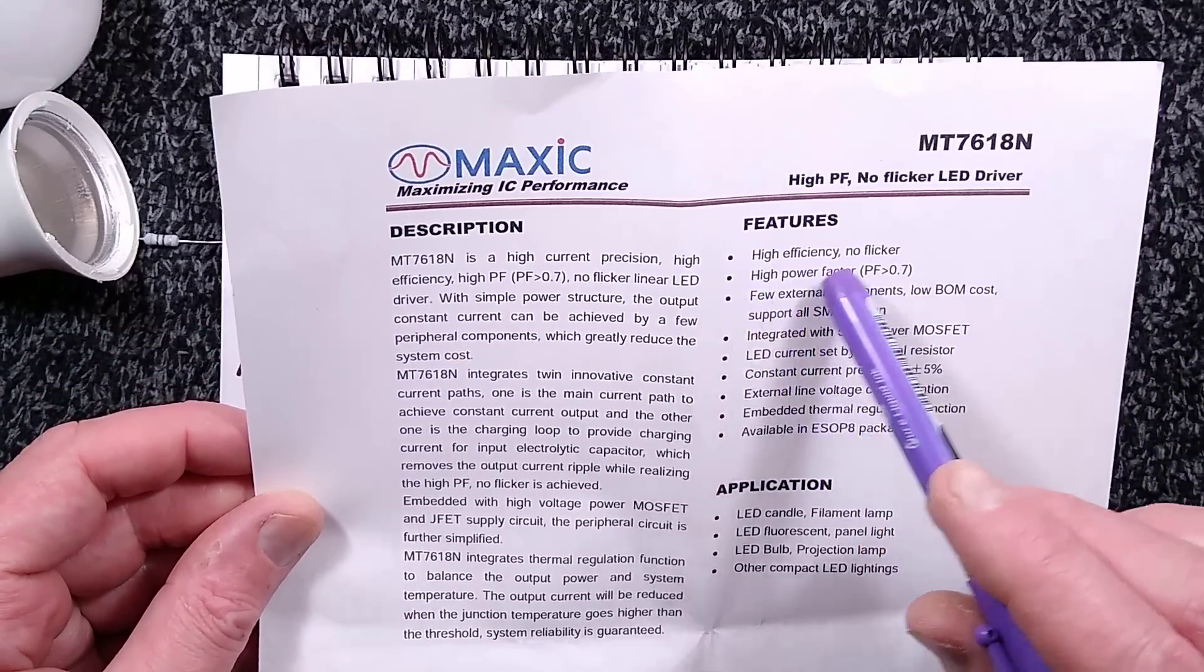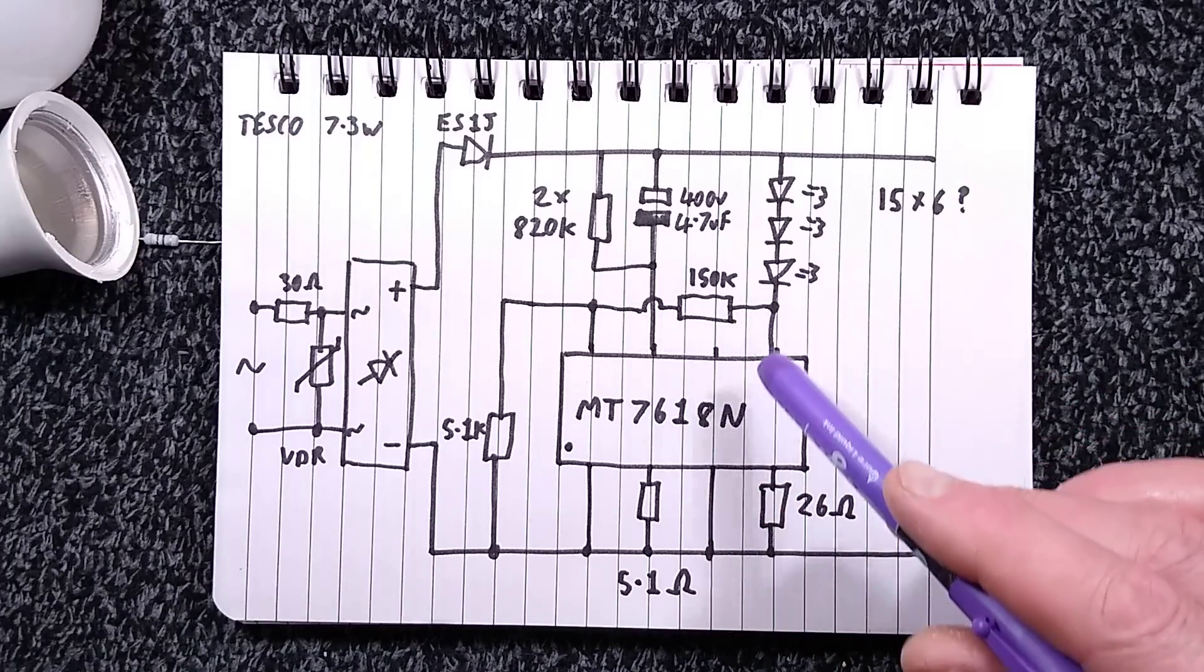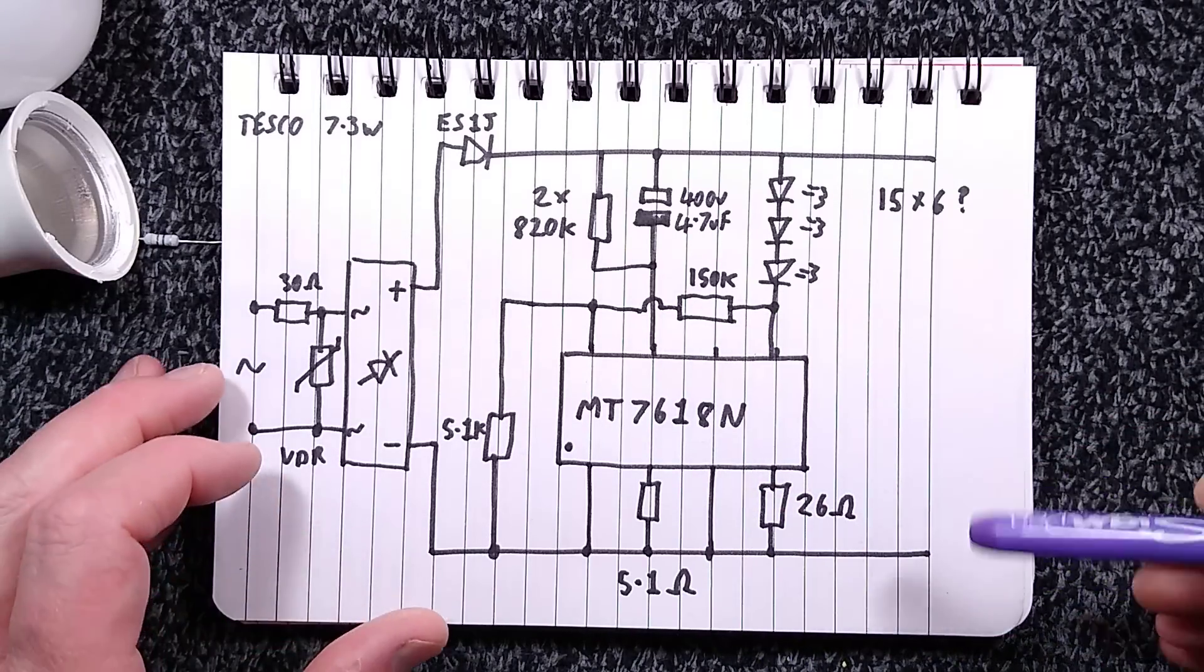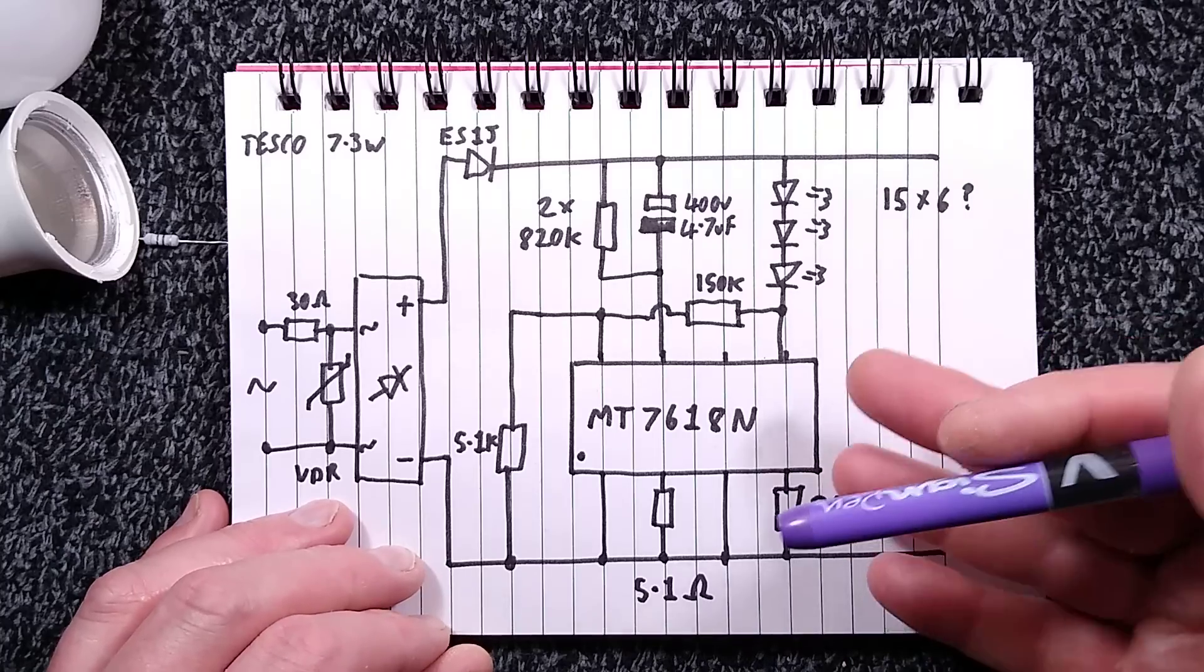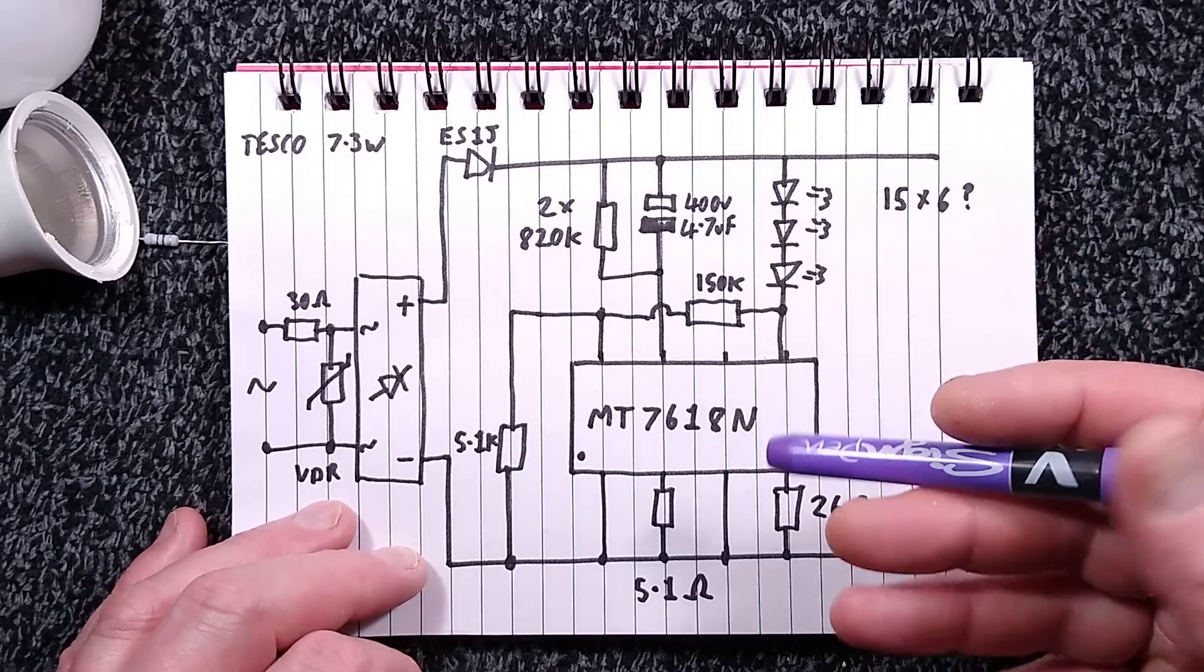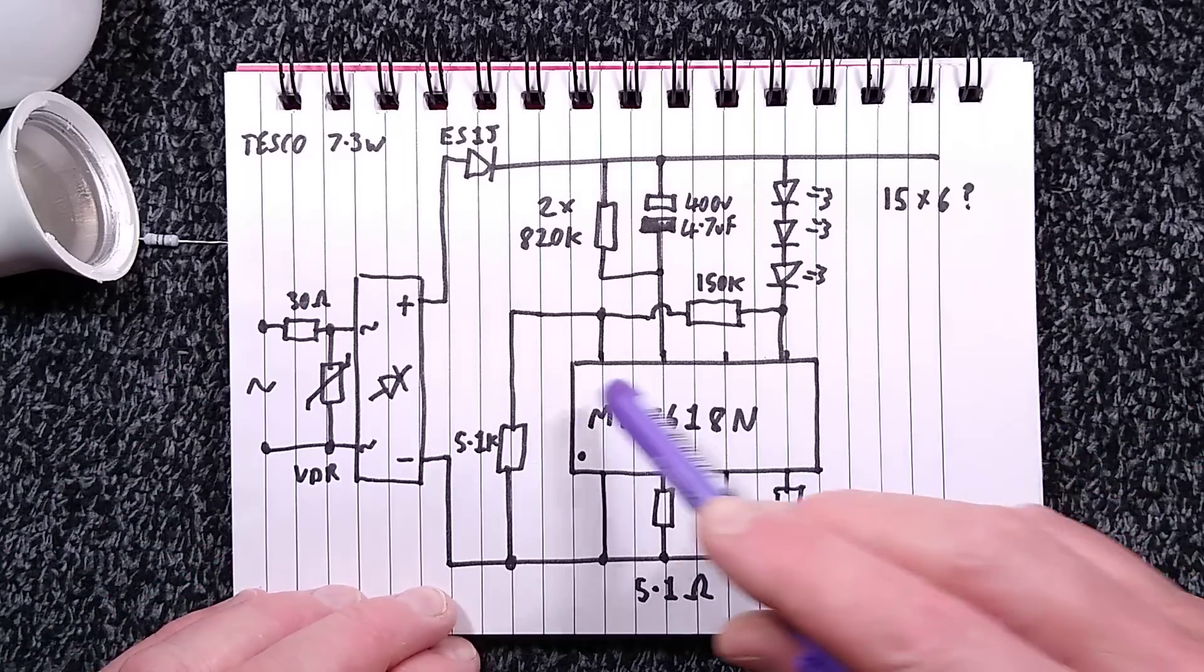The main thing it says is high power factor, power factor greater than 0.7. I get the feeling that this circuitry is preemptively taking a European box whereby particular powers of lamps have to have a specific better power factor than the set level. And that might be what this is for.